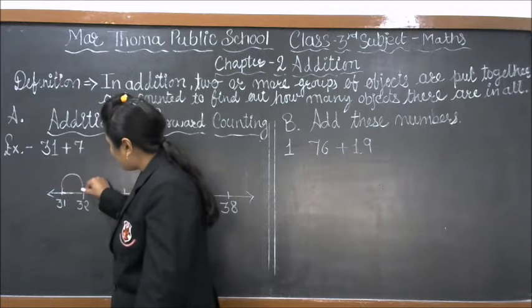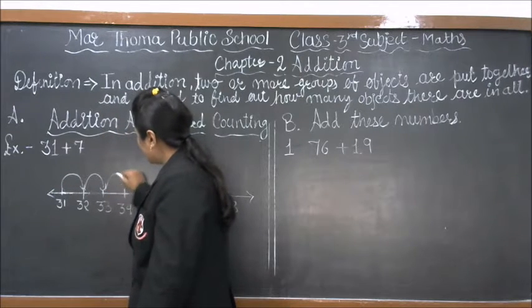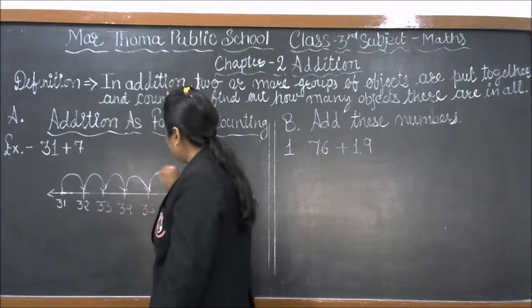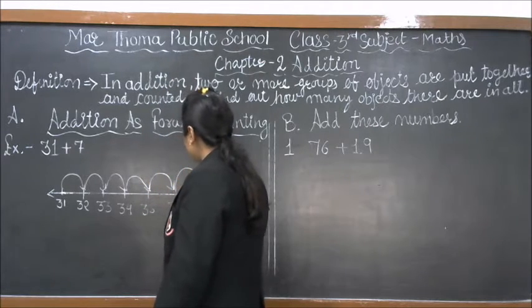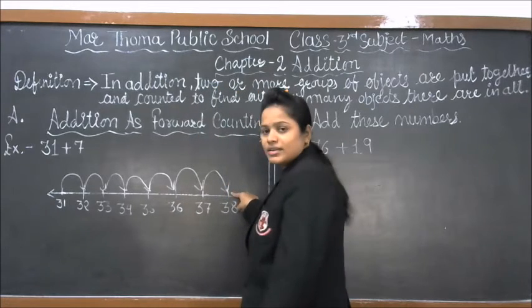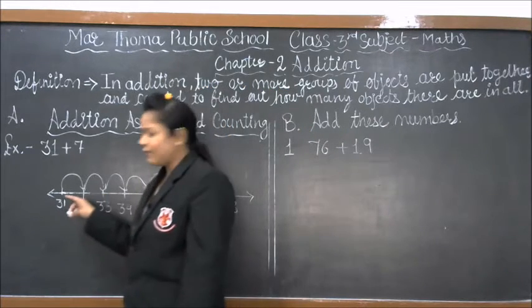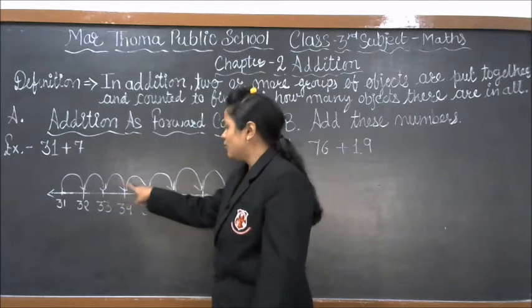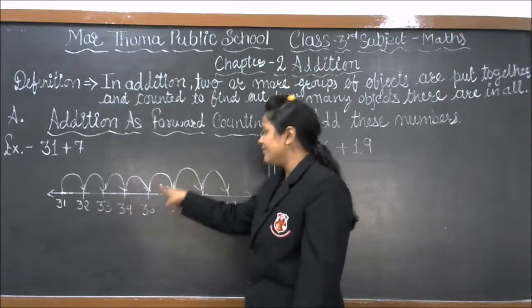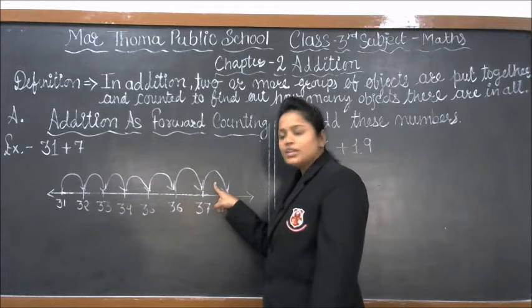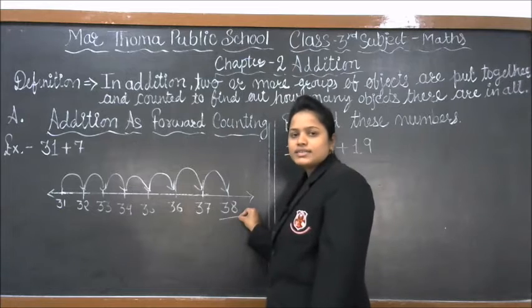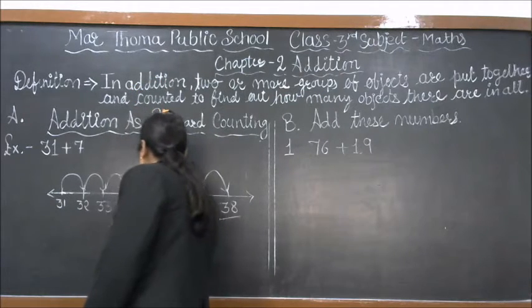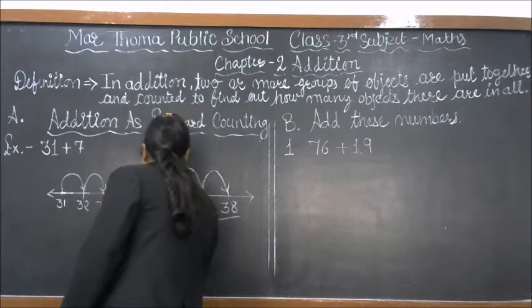We jump 7 times: 1, 2, 3, 4, 5, 6, 7. So counting forward from 31: 32, 33, 34, 35, 36, 37, 38. Our answer is 38. So we write the answer as 38.